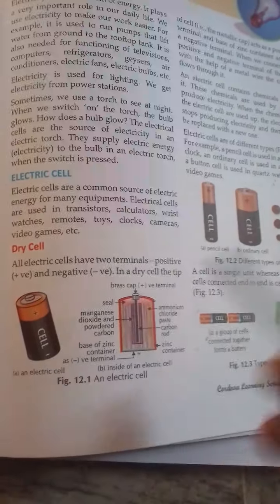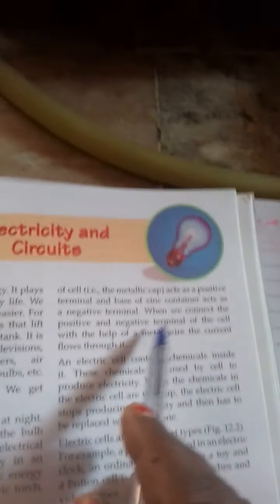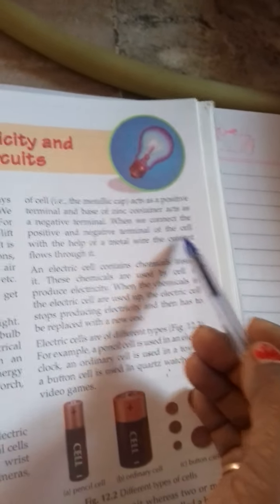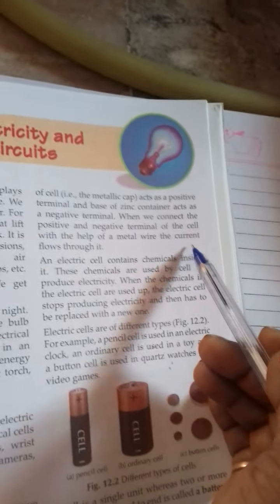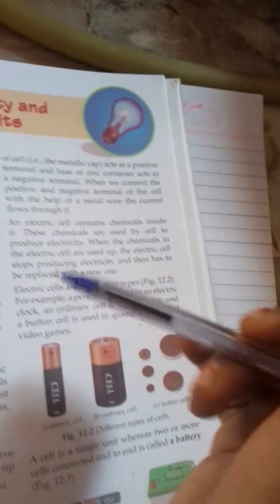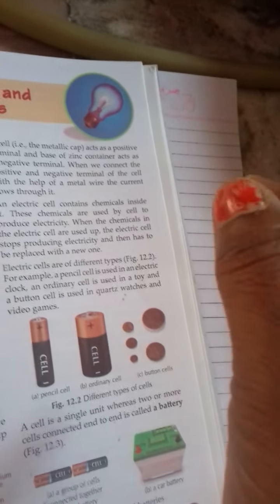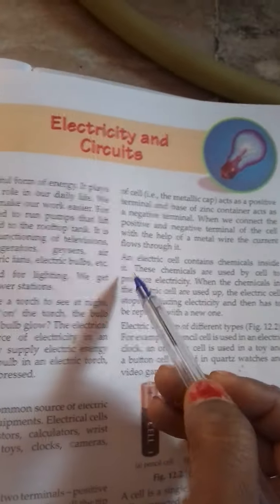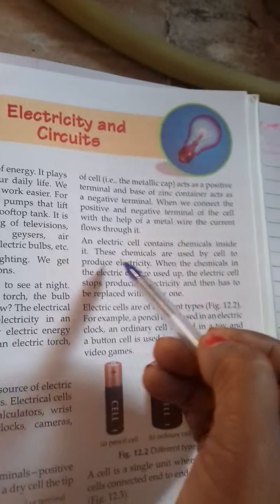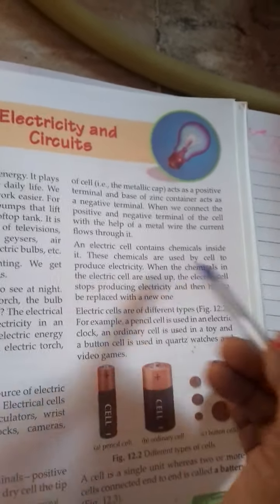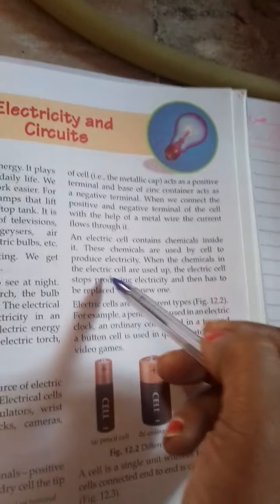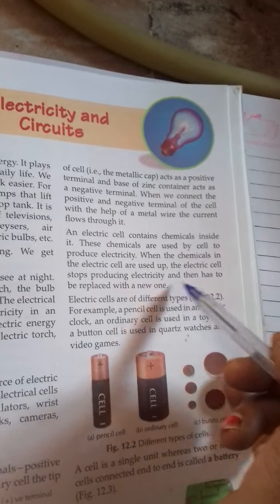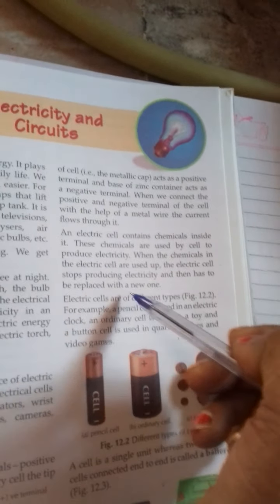When we connect the positive and negative terminal of the cell with the help of metal wire, the current flows through it. An electric cell contains chemicals inside it. These chemicals are used by cell to produce electricity. When the chemicals in the electric cell are used up, the electric cell stops producing electricity and then has to be replaced with a new one.